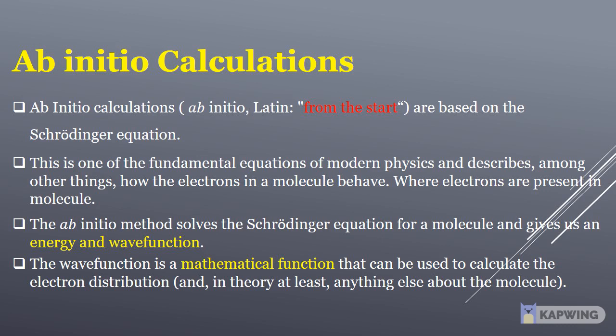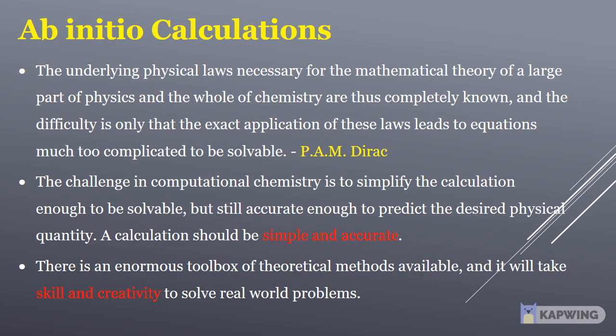P.A.M. Dirac says that the underlying physical laws necessary for the mathematical theory of a large part of physics and the whole of chemistry are thus completely known, and the difficulty is only that the exact application of these laws leads to equations much too complicated to be solvable. The challenge in computational chemistry is to simplify the calculation enough to be solvable, but still accurate enough to predict the desired physical quantity.